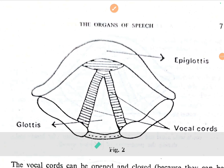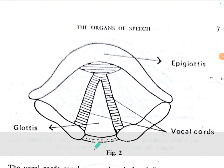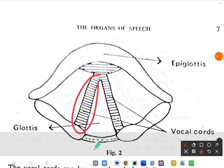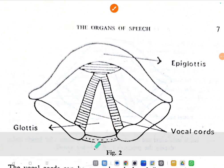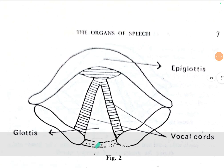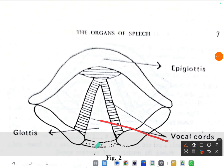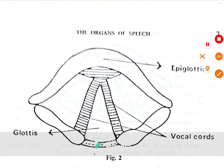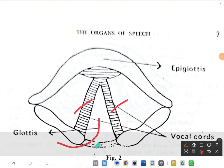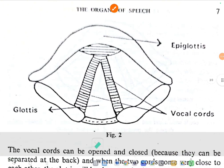These are called vocal cords, and the space between the vocal cords is called glottis. So these two are vocal cords — one, two — and the space between them is called glottis. The top part of this is called epiglottis. This is the phonatory system.